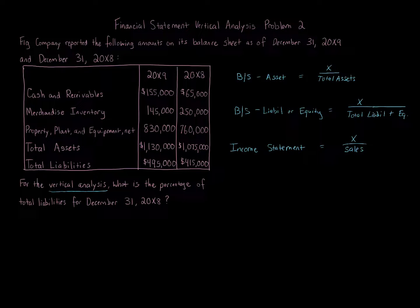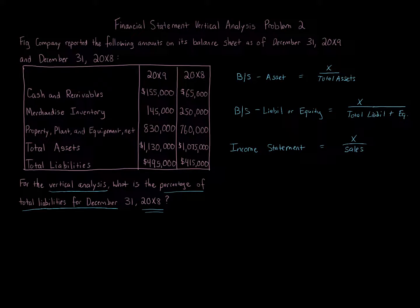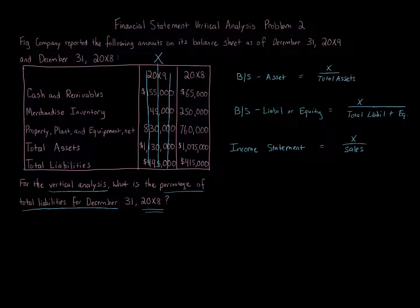Vertical analysis is focused specifically on one year. Here it's 20x8, asking the percentage of total liabilities for December 31st 20x8. So we can eliminate the 20x9 column — we don't need to worry about that. We're focused specifically on total liabilities. I won't cross off the other items because we might need them.